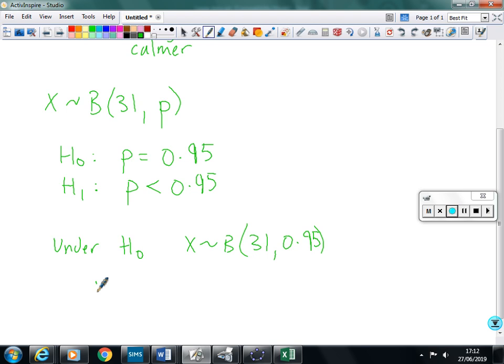So we get our graphics calculators, and then using this distribution, so 31 trials, probability of success 0.95, we're going to try and find the probability that X is less than or equal to 27. So what's the probability of getting a result as extreme or more extreme than the one that we observed, given that the probability is 0.95. So if we use the binomial cumulative distribution function on your calculator, and you work that probability out, it turns out to be 0.06712404.